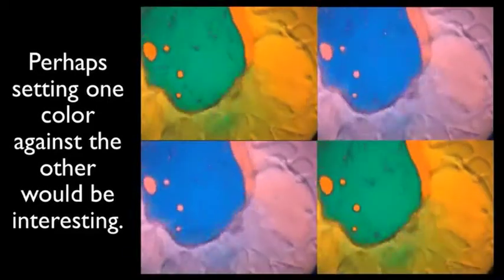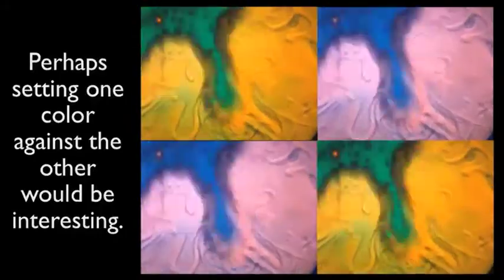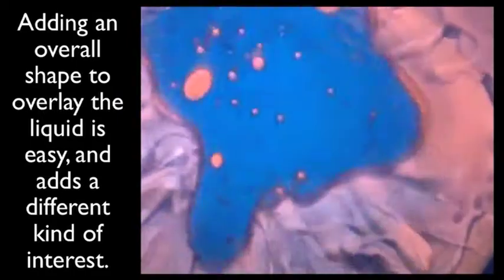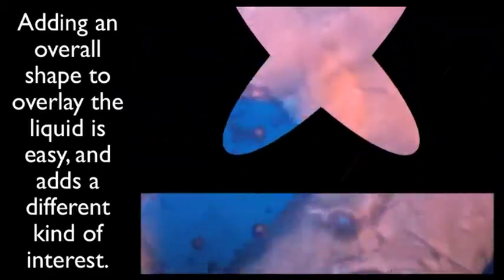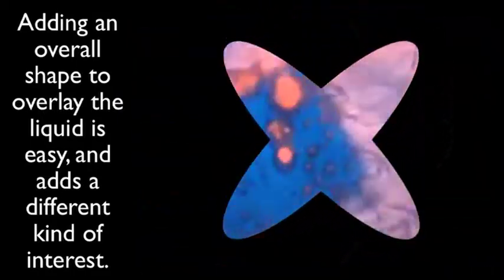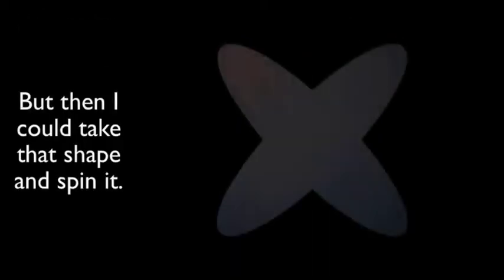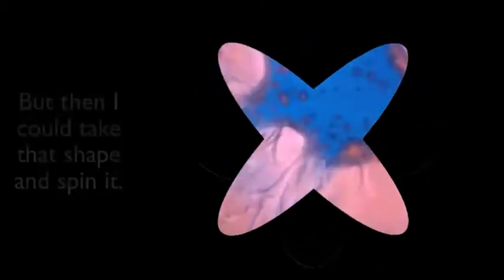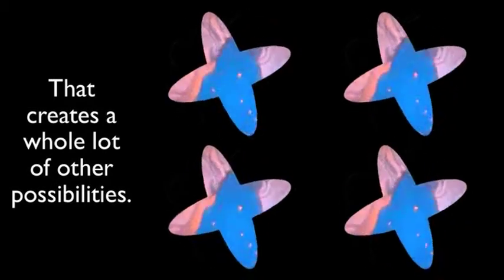Perhaps setting one color against the other would be interesting. Adding an overall shape to overlay the liquid is easy and adds a different kind of interest. But then I could take that shape and spin it. That creates a whole lot of other possibilities.